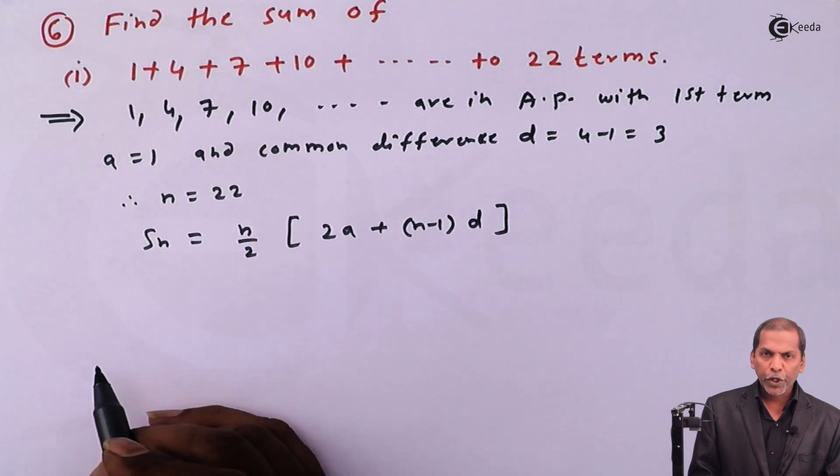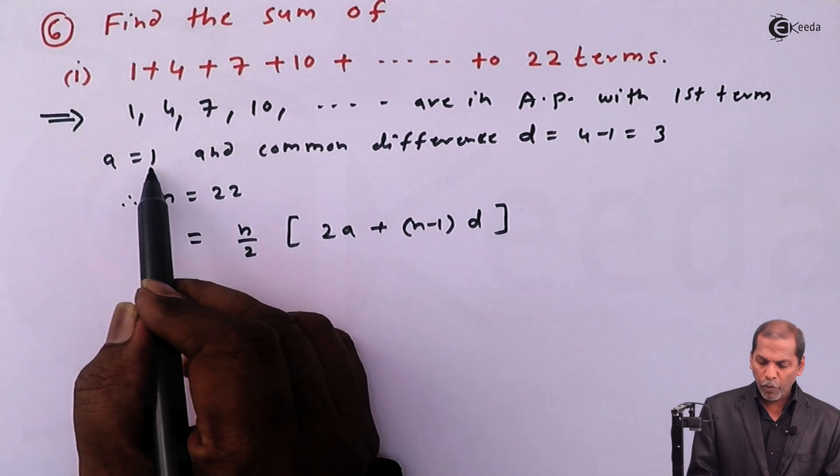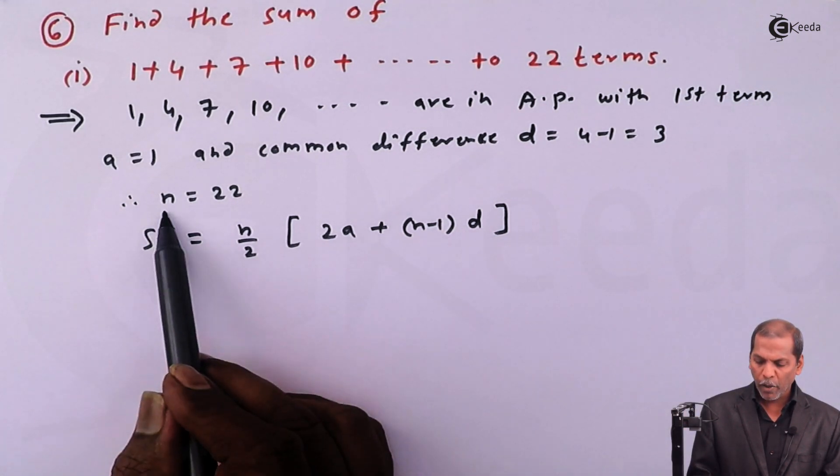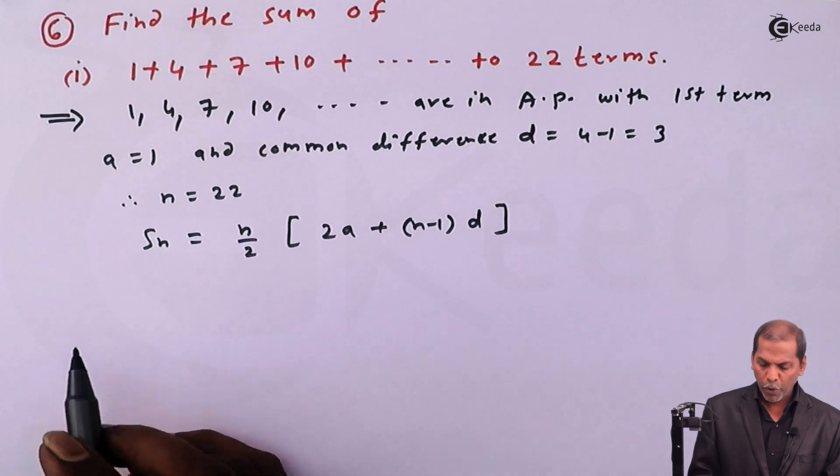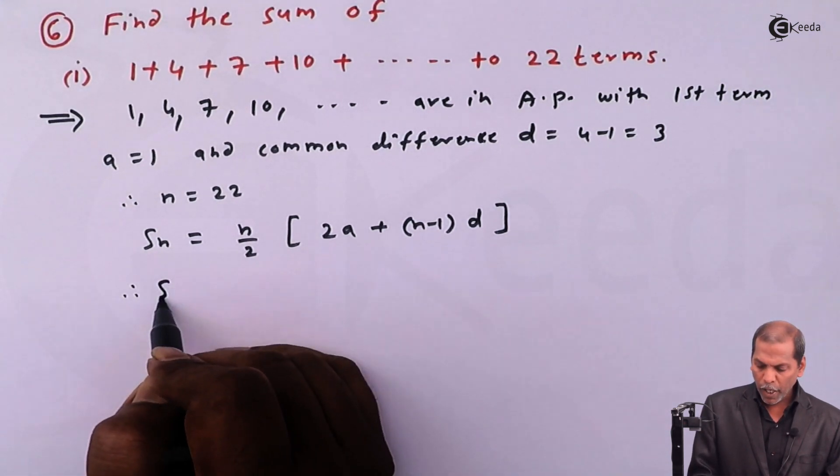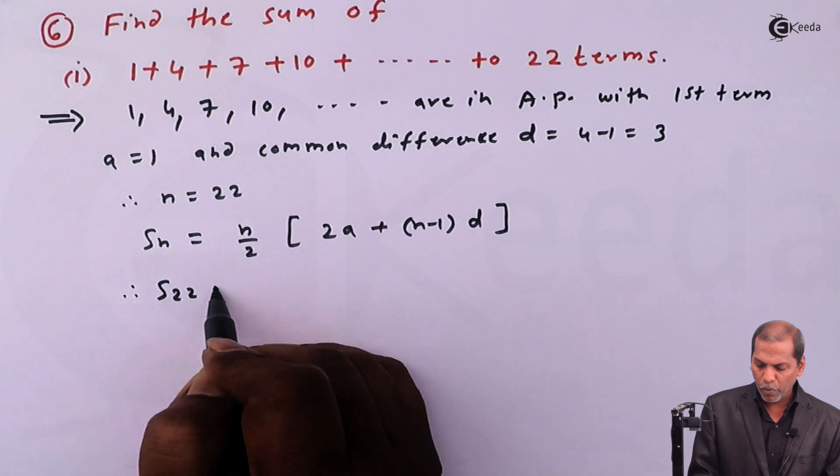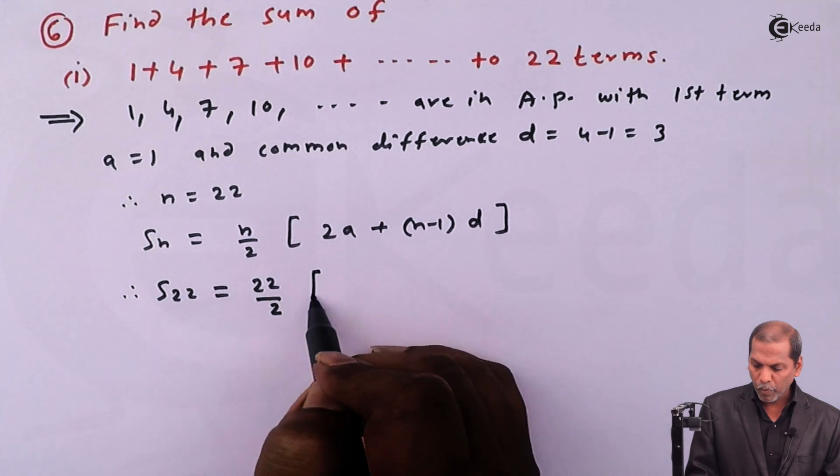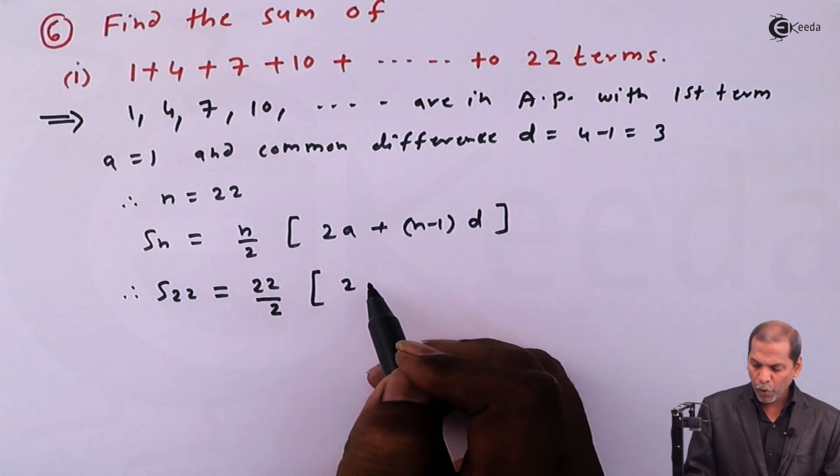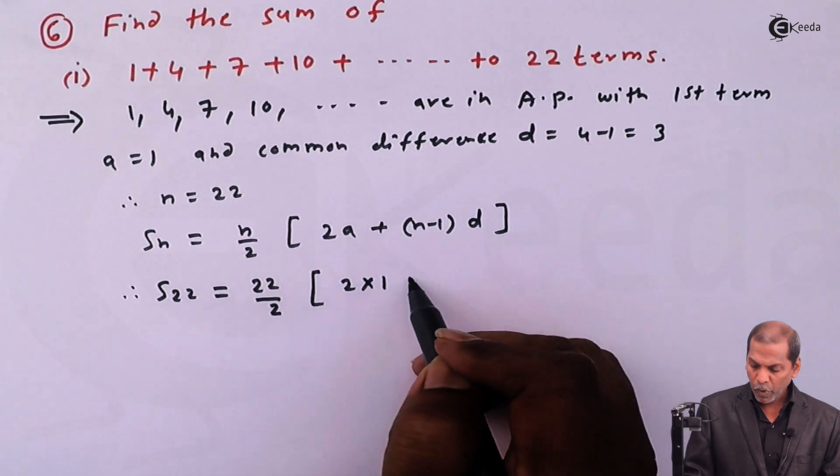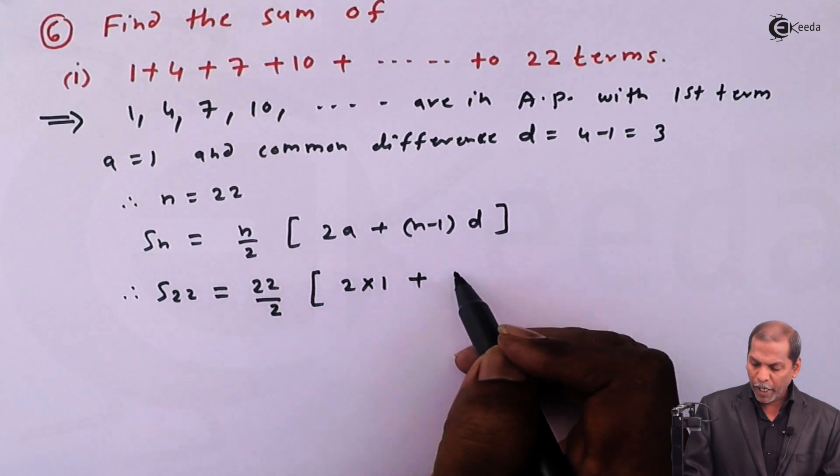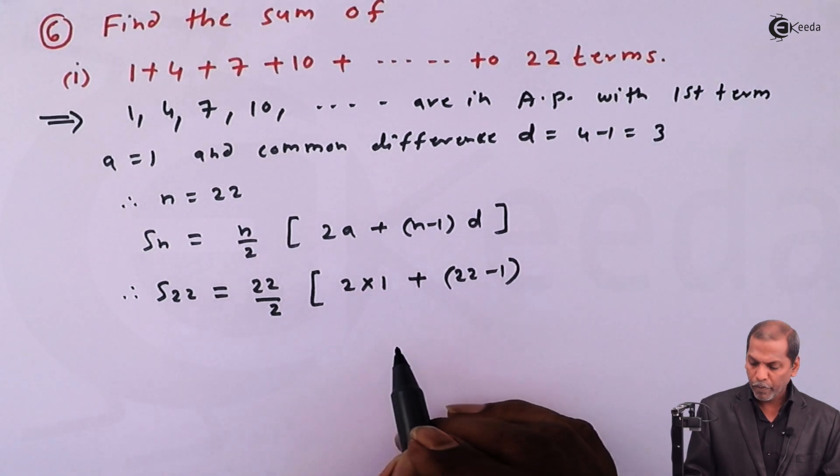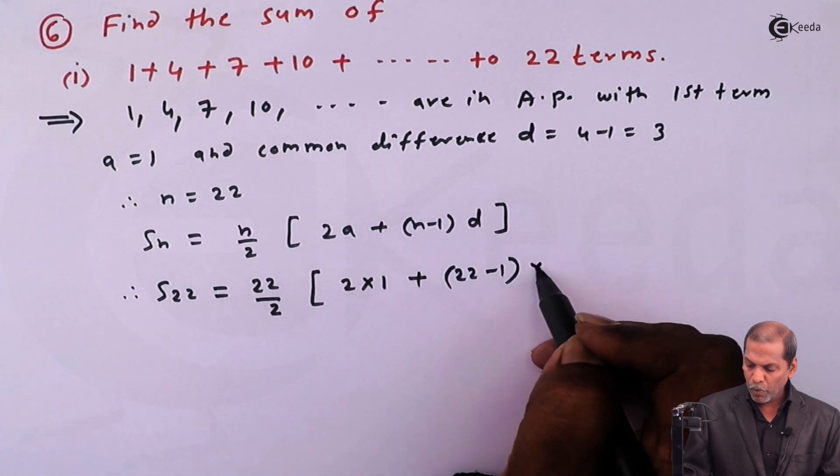In this formula we substitute a equal to 1, common difference d equal to 3, and n equal to 22. We get S_22 equals 22 upon 2 in bracket 2 into 1 plus next bracket 22 minus 1 bracket complete into 3.